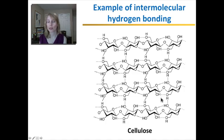Hydrogen bonding also occurs in other molecules like cellulose, which makes up plant cell walls. It is the part of your diet that's fiber. And all of the dashed lines here represent hydrogen bonding within cellulose that makes cellulose very rigid and gives plants their structure.